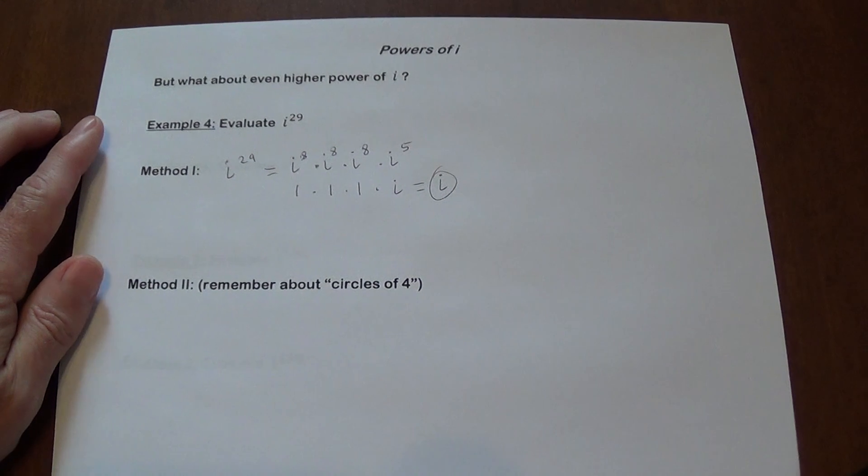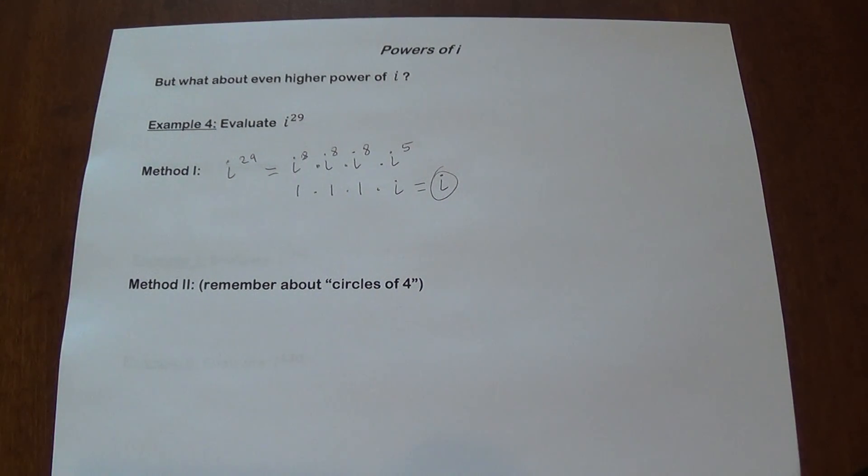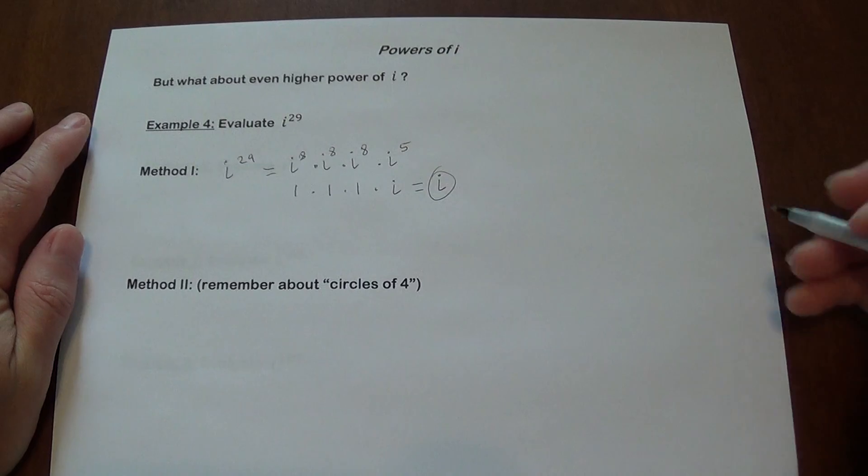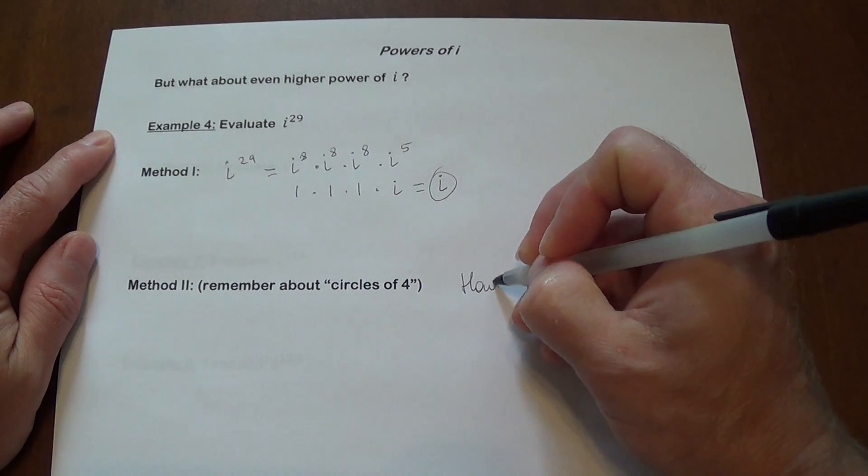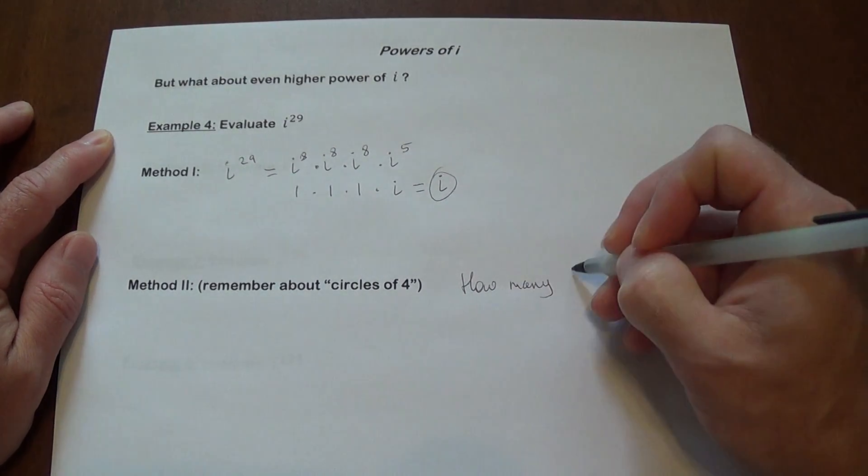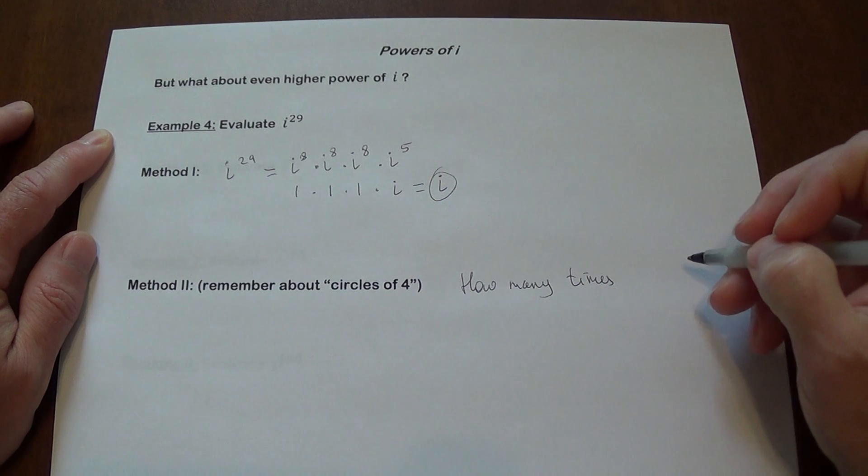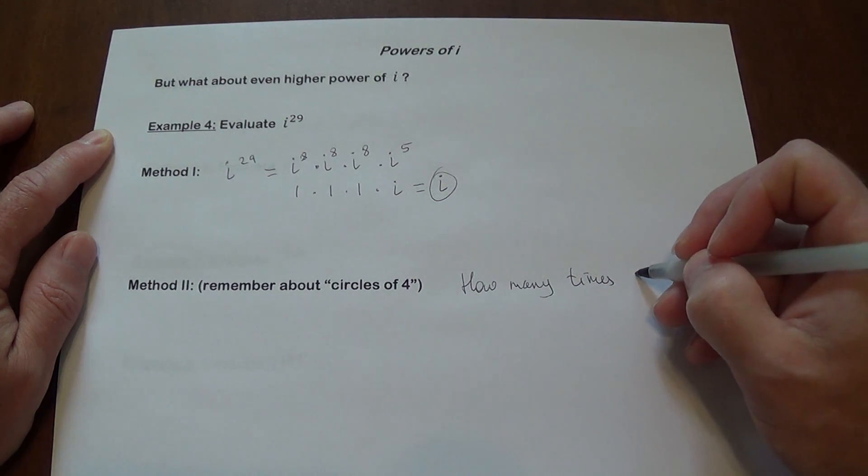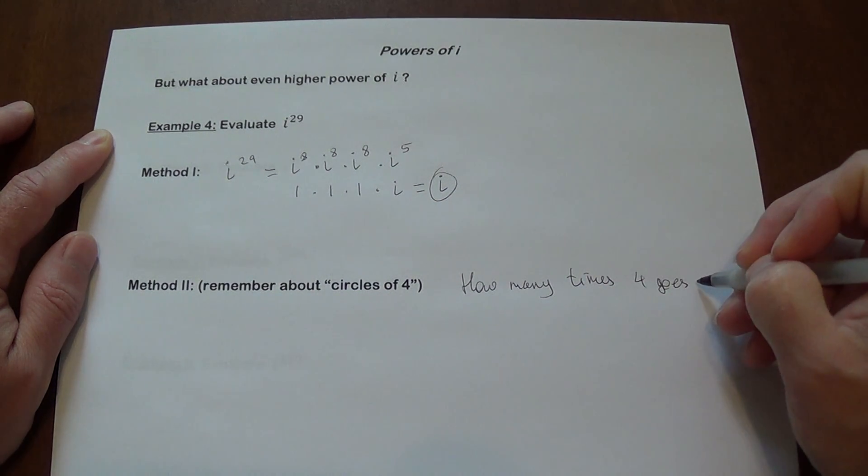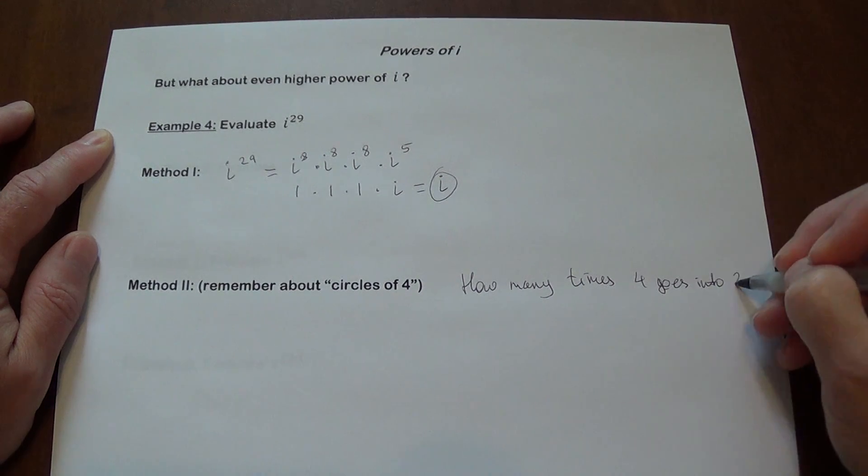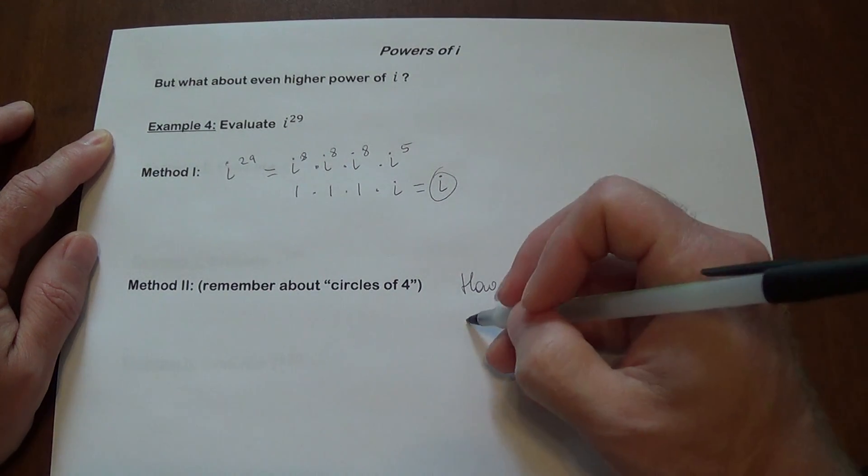Like I said, that's one way to do that. But it seems to be a little tedious if you think about going to even higher exponents that could be not so much of a challenge, but just very time consuming. What do we know? We know we're going around the circles of four. The question is, how many times four goes into 29? But that's not really our question. What is the remainder?